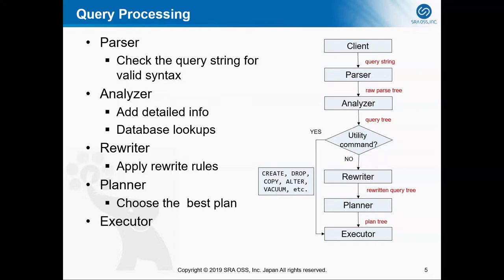If a user sends a query to the Postgres server, the parser will first check the query syntax and generate a parse tree. The analyzer will add more detailed information to the parse tree and generate a query tree. If the query is a utility command like CREATE, DROP, COPY, VACUUM, the query will be sent to the executor directly. Otherwise, it will go through rewriter, planner, and executor. Finally, the executor will return the result to the client.